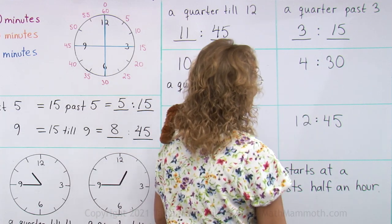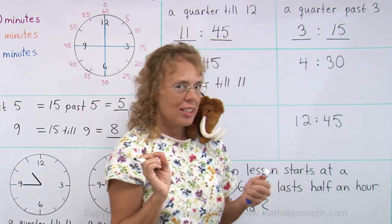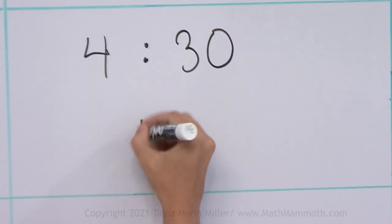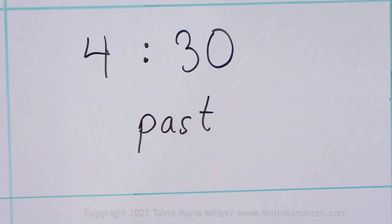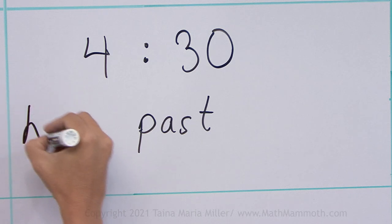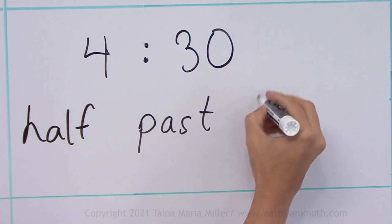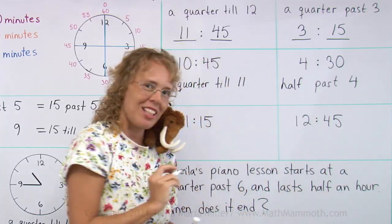Four thirty. Here we are not going to use till. We're going to use past. Thirty is half an hour. Thirty minutes is half an hour. This is half past four. And you learned that in first grade.